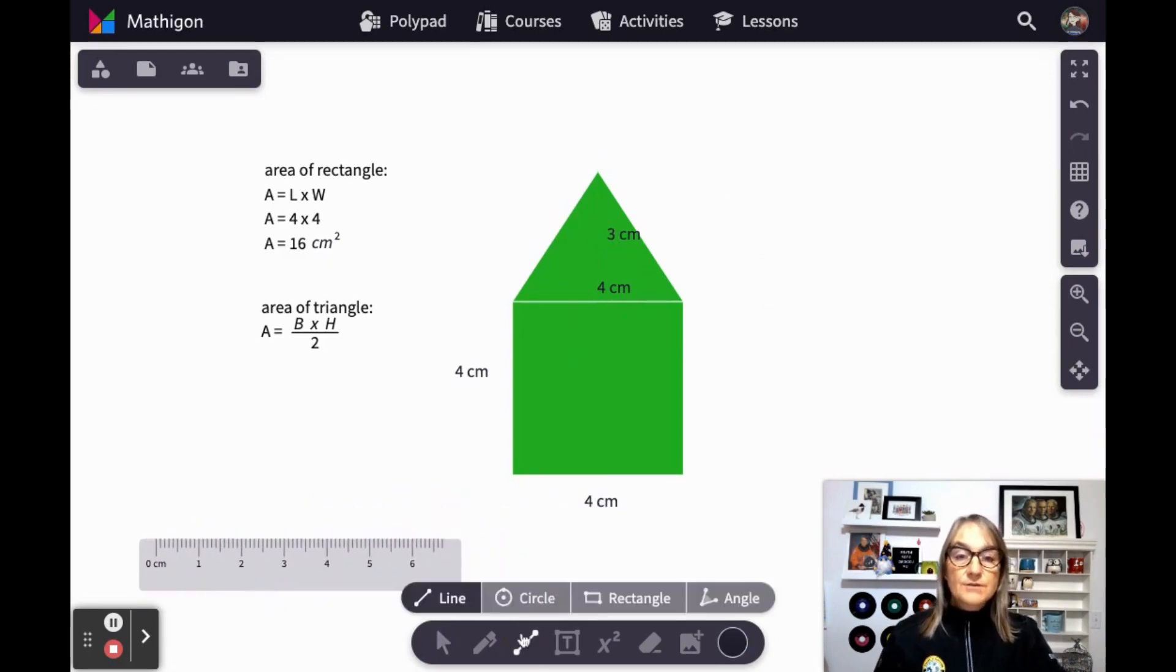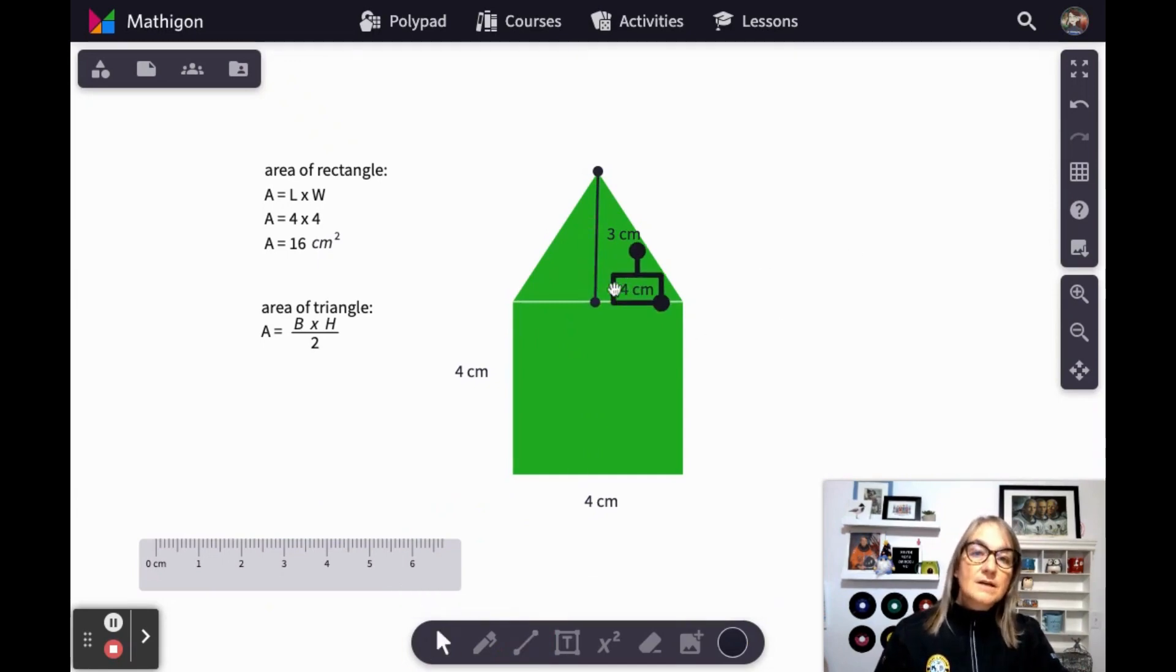And I can move my ruler out of the way. Sometimes it's a good idea to just draw a line showing the height of the triangle so that we can see which dimension, which measurement refers to which dimensions. We put our four centimeters for our base, and our three centimeters for our height so that we don't lose track.